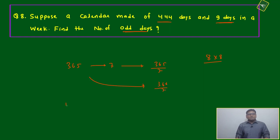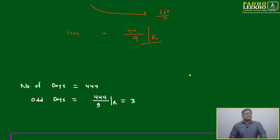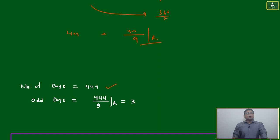But here, if it is 444 days and nine days in a week, we just take the remainder. 444 divided by 9 gives us odd days equal to 3.